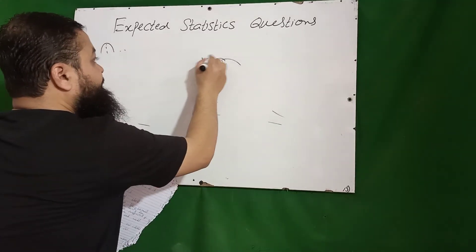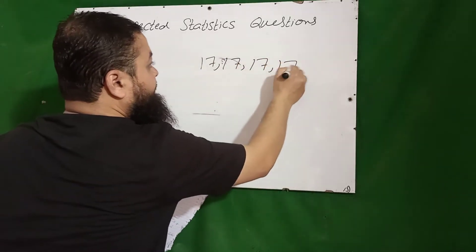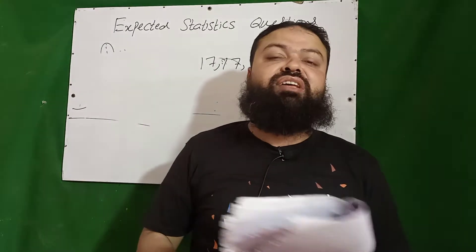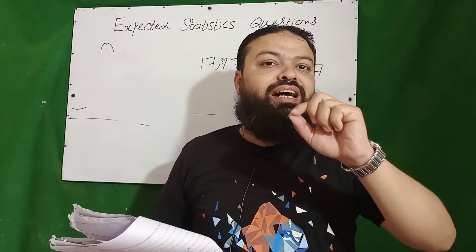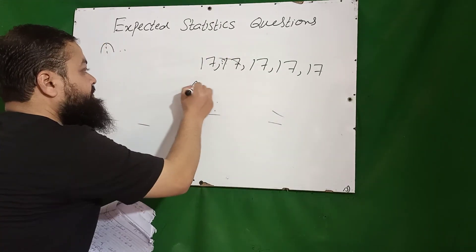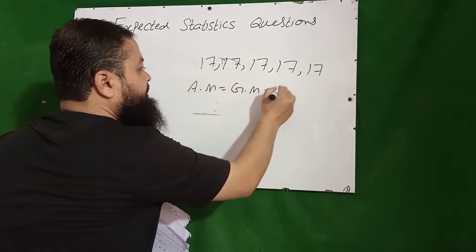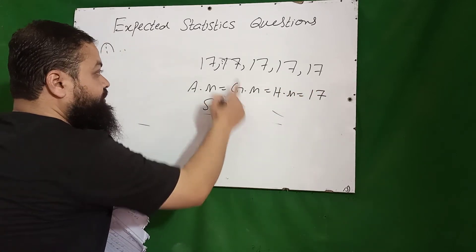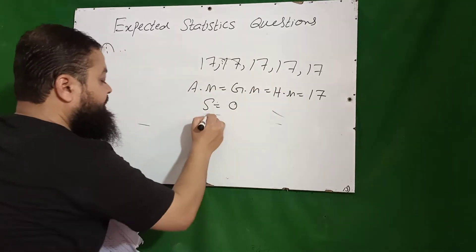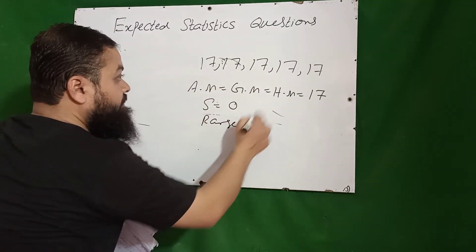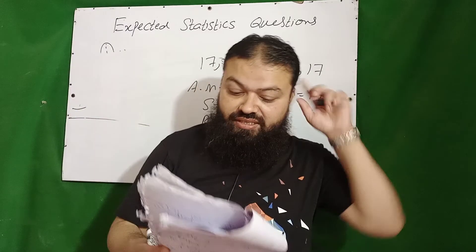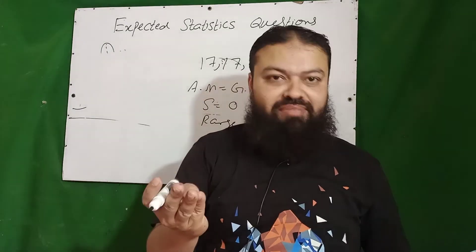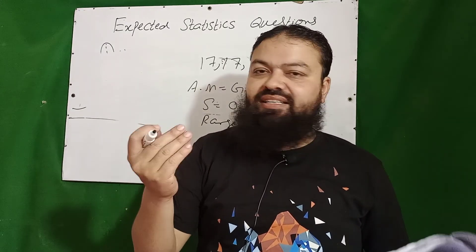The next question: there are values 17, 17, 17, 17, 17. This is a very common question in every real test of statistics. When all the observations of a data set are the same, the arithmetic mean equals the geometric mean equals the harmonic mean, and they all equal 17. Standard deviation is zero because all values are same — there is no variation. Range is also zero: maximum minus minimum equals zero.